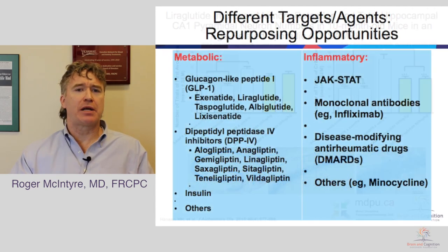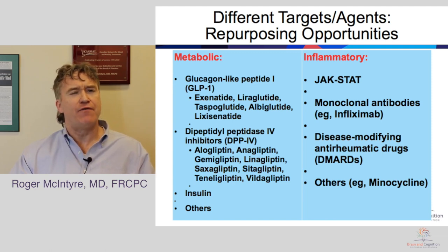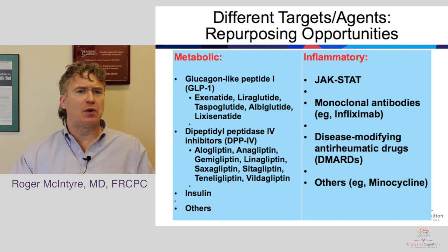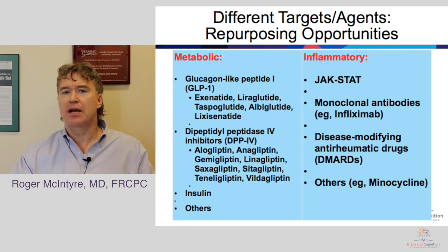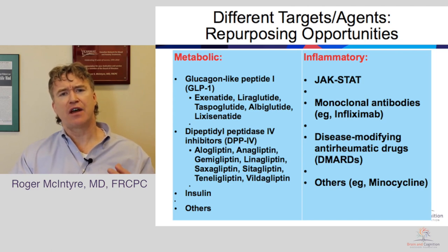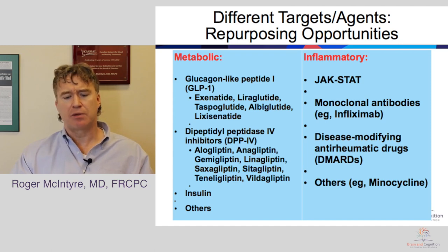We use the information about comorbidity to not only treat patients, but also to better understand what is happening beneath the surface — the neurobiological process. In later modules, we're going to discuss very interesting approaches targeting metabolic and inflammatory systems as not only symptom-suppressing strategies, but perhaps also disease-modifying or curative strategies in mood disorders. Sirtuins as transcription factors may also be relevant — caloric restriction, resveratrol, and possibly metformin have been shown to increase sirtuin activity.